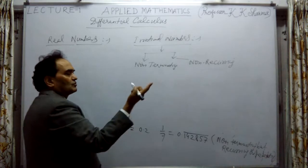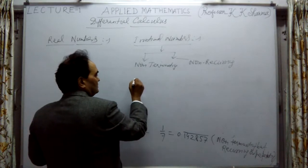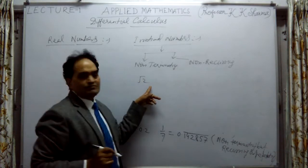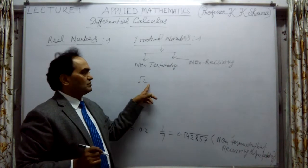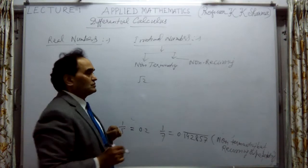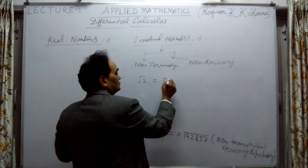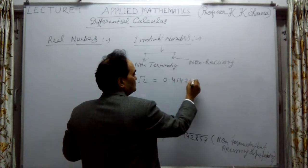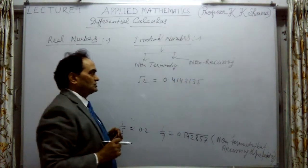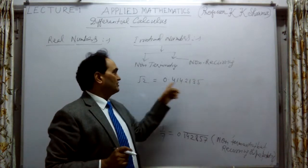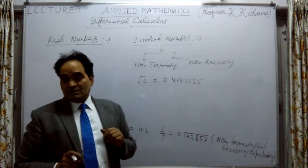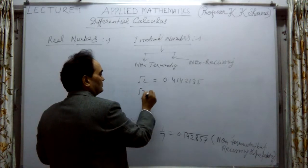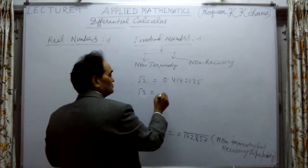For example, if I take square root of 2 — the square roots of all prime numbers are mostly irrational. √2 = 1.4142135... and this number is non-terminating. Similarly, √3 = 1.7320508... and so on.